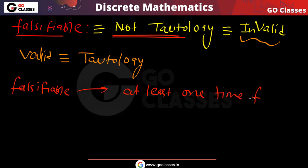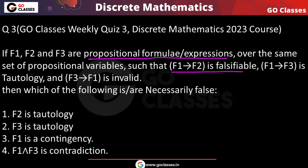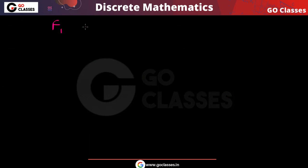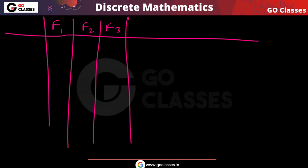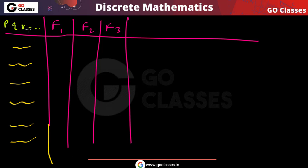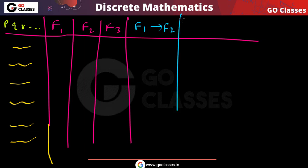So falsifiable means at least one row in the truth table is false. The question says you have three formulas F1, F2, F3 over some propositional variables. It doesn't matter what those variables are — if there are six propositional variables, there will be 2^6 rows. The question says F1 implies F2 is falsifiable, meaning in at least one row it is false.